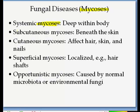Subcutaneous mycosis is beneath the skin and usually results from a puncture wound. Cutaneous mycosis affects the dermis — hair, nails, and epidermal surfaces. Superficial mycosis can be on the hair shaft or superficial epidermal cells. The last category is opportunistic mycosis, which is generally harmless in a normal host but becomes pathogenic when the host is traumatized or under strenuous stress.